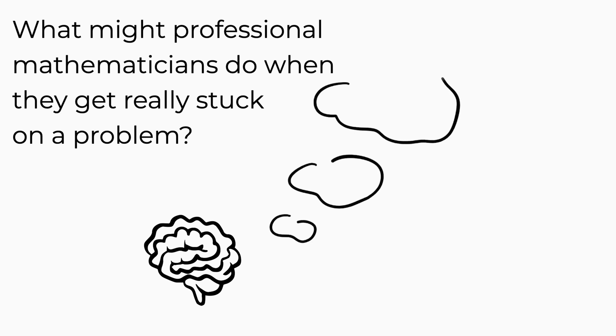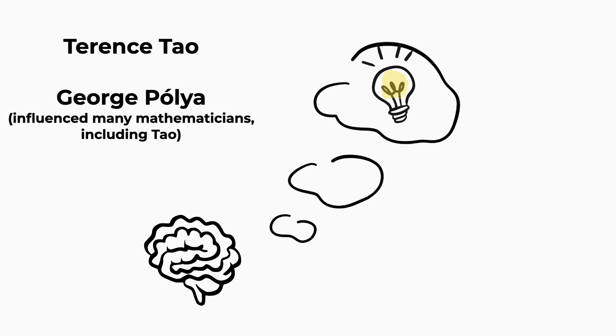What might professional mathematicians do when they get really stuck on a problem? Here is a useful principle that has been recommended by many leading mathematicians, including Terence Tao and George Pólya, from which we will see a few useful tips. And as usual, all references and more resources can be found in the description.